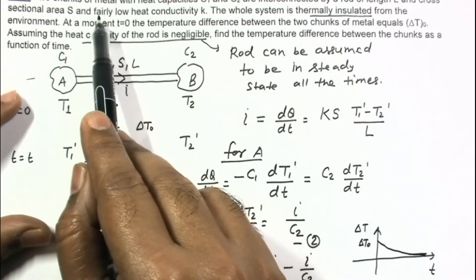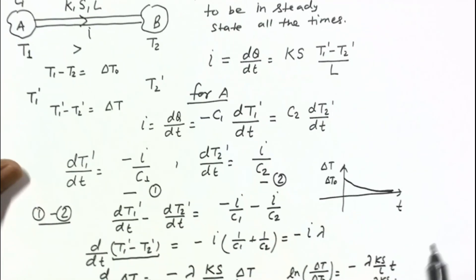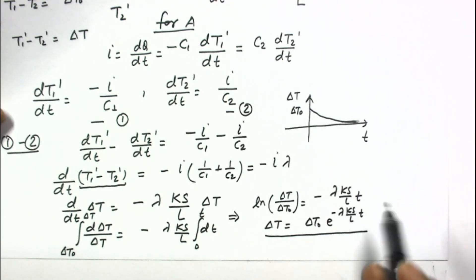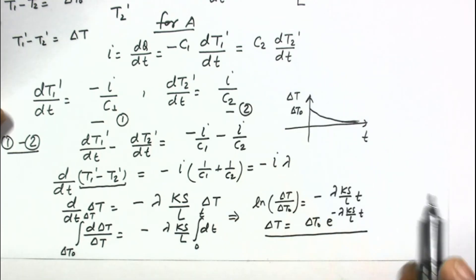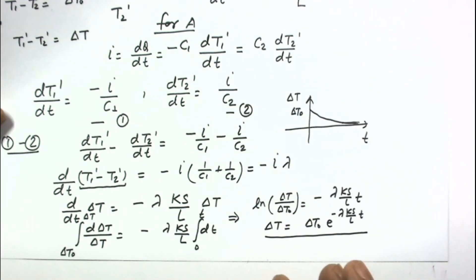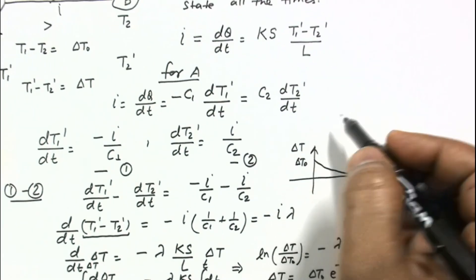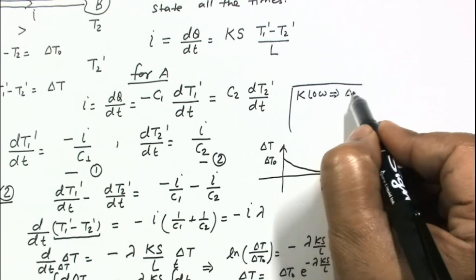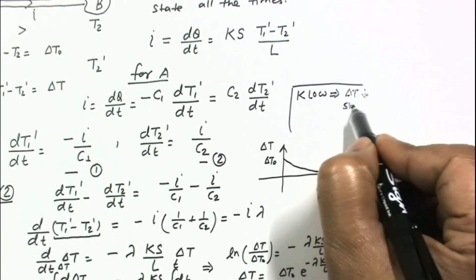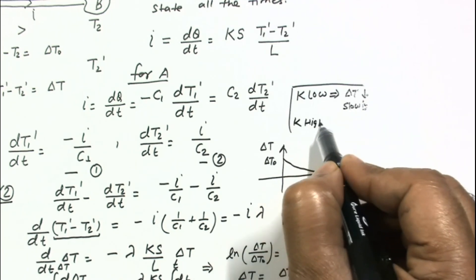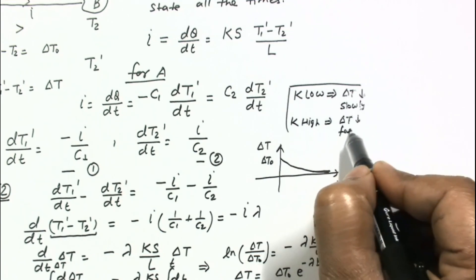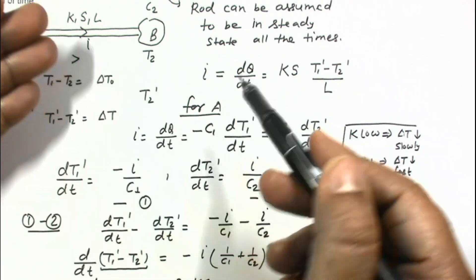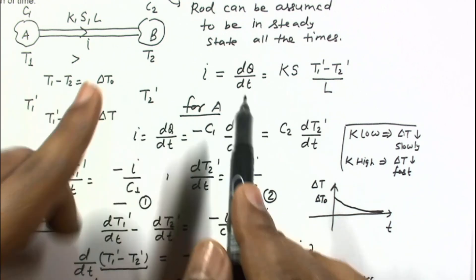We can now interpret the meaning of 'fairly low heat conductivity.' If heat conductivity K is higher, then the exponent is larger in magnitude and the temperature difference will decrease very rapidly. If K is low, the temperature difference will decrease slowly. So the conclusion is: low K means delta T decreases slowly; high K means delta T decreases fast, meaning both chunks reach equal temperature more quickly.